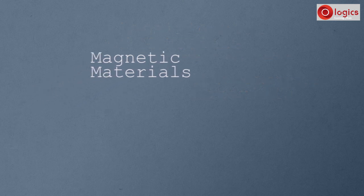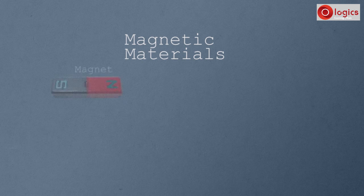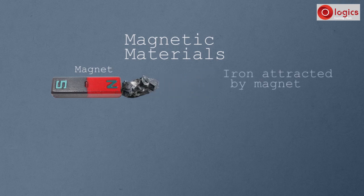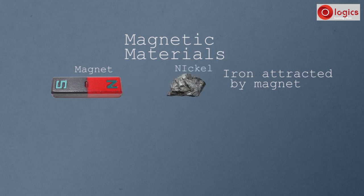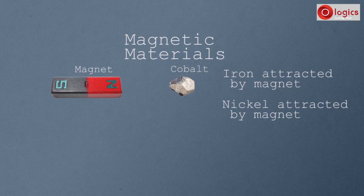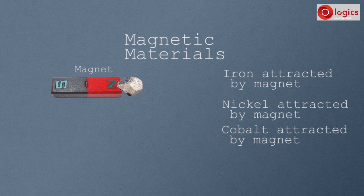Let's see magnetic materials. This is the magnet. This is a piece of iron. Take the iron close to the magnet — iron is attracted by the magnet. This is a piece of nickel — nickel is also attracted by the magnet. This is a piece of cobalt — cobalt is also attracted by the magnet. These materials are attracted by the magnet, so they are known as magnetic materials.